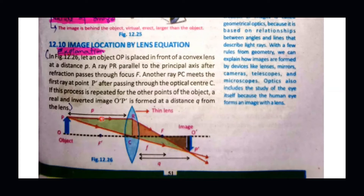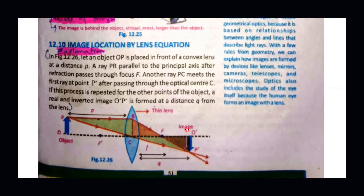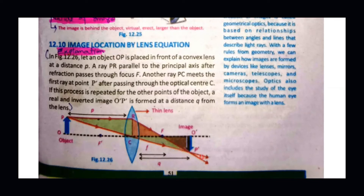In the previous lecture, we studied how image formation actually works. The first light ray from the object moves parallel to the principal axis and, after passing through the lens, refracts and passes through the focal point. The second ray moves through the optical center of the lens. We have studied three principal rays. These rays form a real and inverted image in front of a convex lens, on the right side of the lens.